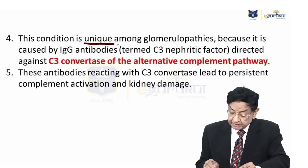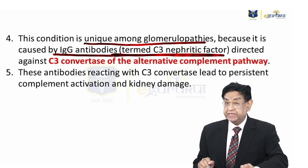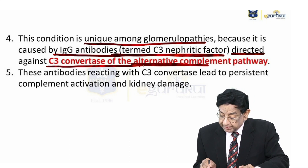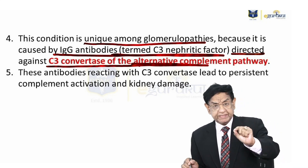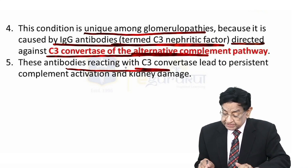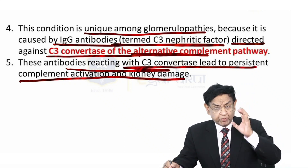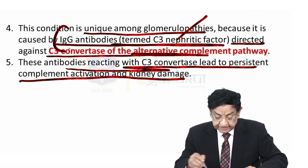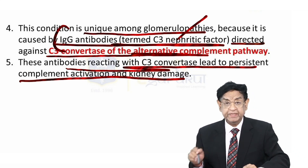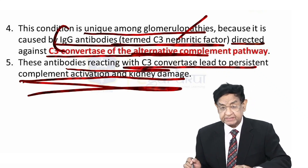This is unique among the glomerulopathies because it is caused by IgG antibodies termed C3 nephritic factor, directed against C3 convertase of the alternate complement pathway. It is IgG which is activating the alternate pathway. These antibodies react with C3 convertase leading to persistent complement activation and kidney damage.